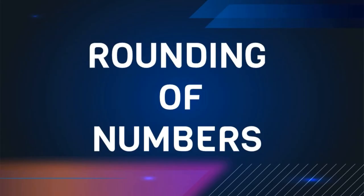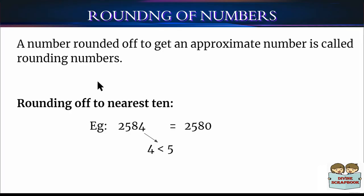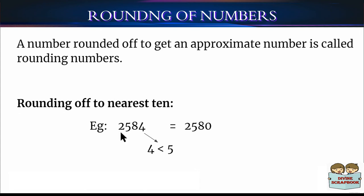Now let us learn about rounding of numbers. A number is rounded off to get an approximate number, which means it is about or close to the exact number. Now let's talk about rounding off numbers to the nearest 10.